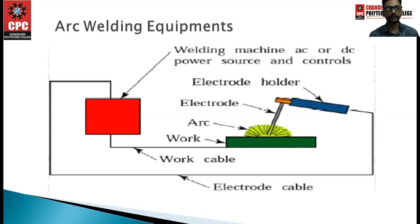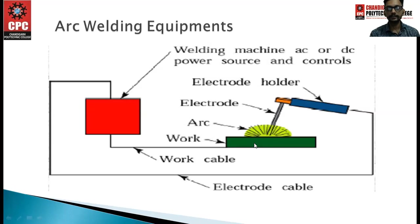In the arc welding equipment diagram, the power machine provides power to the workpiece and electrode via positive and negative terminals. When the negative terminal is connected to the workpiece and positive terminal is connected to the electrode, we have forward polarity.